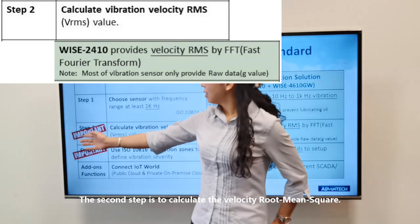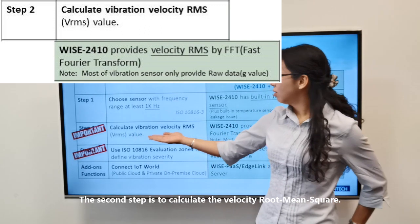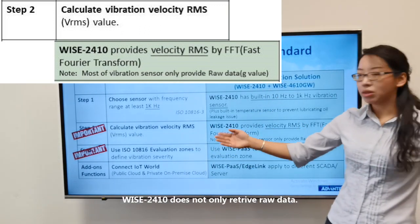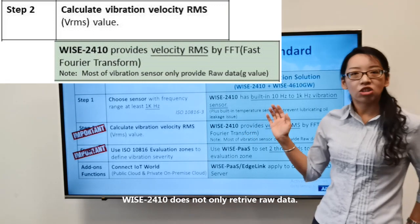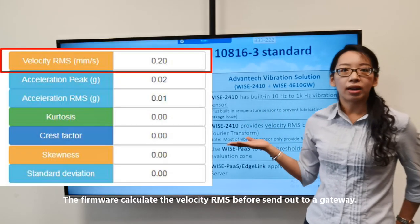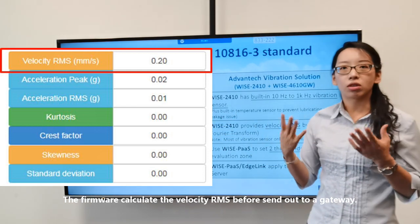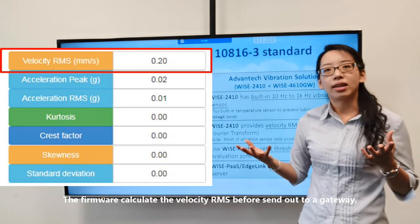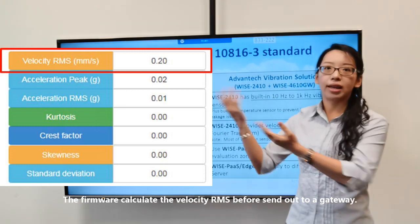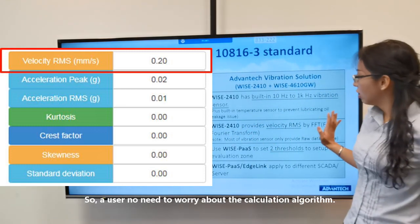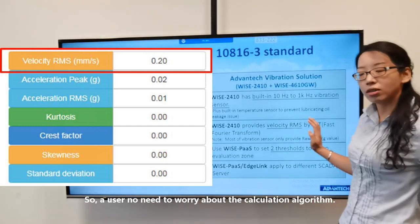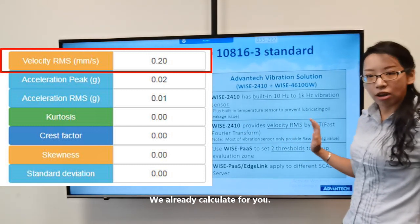The second step is to calculate the vibration velocity RMS. WISE2410 does not just retrieve raw data — the firmware will help users calculate the velocity RMS before sending it out to the gateway. So users don't need to worry about this calculation part; we already calculate it for you.